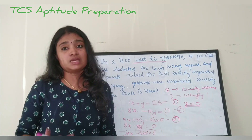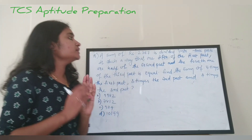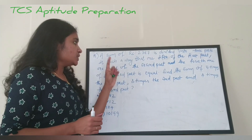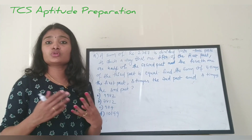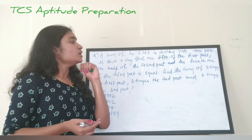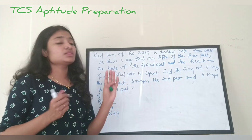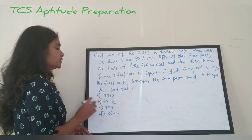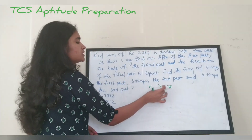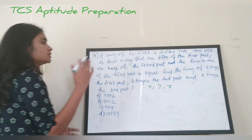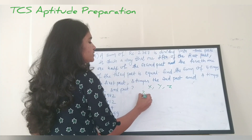Next question: A sum of rupees 2387 is divided into three parts such that one-fifth of the first part, one-half of the second part, and one-fourth of the third part are all equal. Find the sum of five times the first part, three times the second part, and four times the third part. We assume the three parts are x, y, and z.